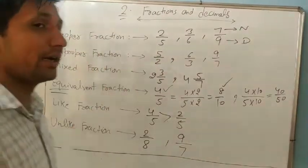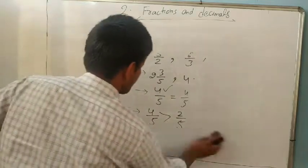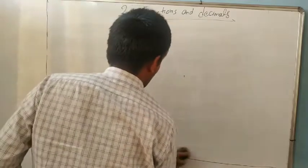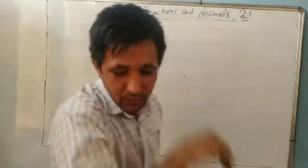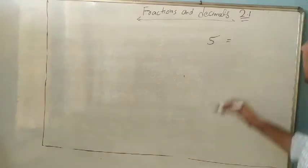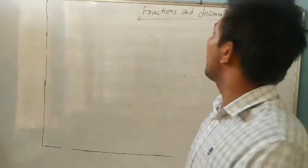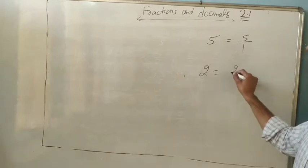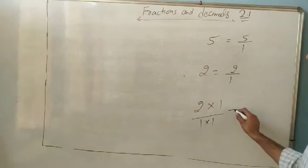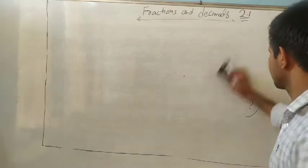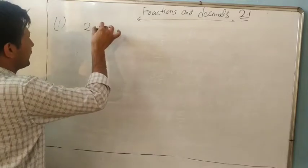Now let's open Exercise 2.1. One important thing to remember: any whole number can be written as a fraction. For example, 5 equals 5/1, and 2 equals 2/1, because dividing by 1 gives the same number. So for the first question, 2 minus 3/5 means we write 2 as 2/1, giving us 2/1 minus 3/5.